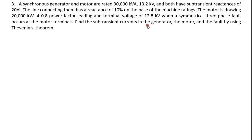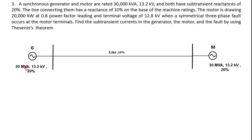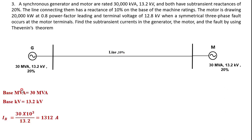We need to find the subtransient current contributed from the generator, motor, and the total fault current. For this numerical, this is a single line diagram — both machines are 30 MVA, 13.2 kV with 20% reactance, and the line has 10% reactance. The base quantity is taken as 30 MVA, 13.2 kV throughout the circuit, since there is no transformation between sections.